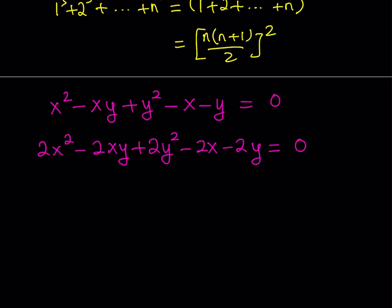The reason we multiply by 2 is to get negative 2xy. Along with x squared and y squared, that will make a perfect square. So I take x squared minus 2xy plus y squared — that's one perfect square. I have leftover terms: another x squared and negative 2x. To complete the square, take the coefficient of x, divide by 2, and square it — half of 2 squared is 1. So I add 1 to both sides to make x minus 1 quantity squared.